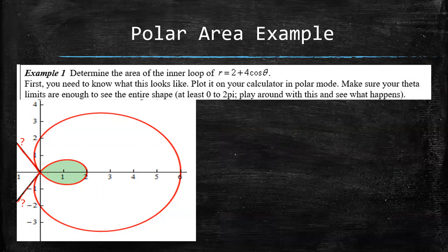And these black lines were not part of the original graph. The original graph is just the red. And what you want to do is you want to think about, okay, when did this inner loop begin and end? So we need to know our alpha and beta for that equation. We need to know where to start the integral and where to end the integral.